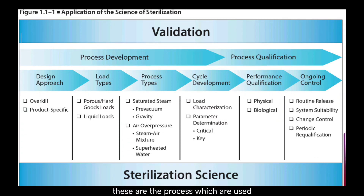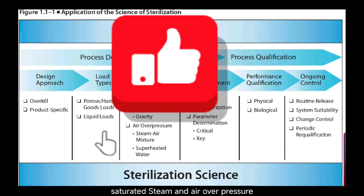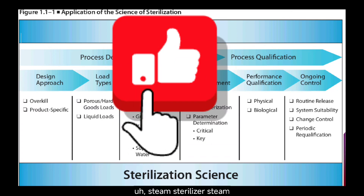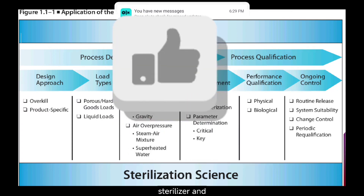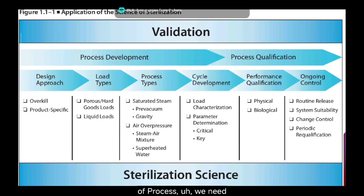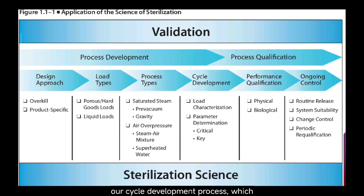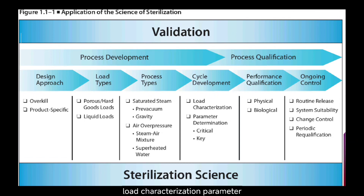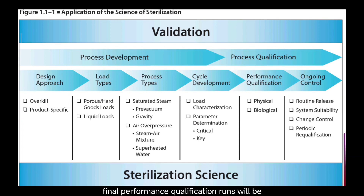These are the processes used for steam sterilizer qualification. Saturated steam and air overpressure cycles are used for qualification of steam sterilizers. After selection of the process, we initiate the cycle development process, which includes load characterization, parameter determination, and critical and key parameter determination.